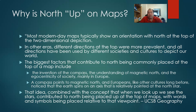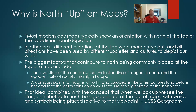The compass points to magnetic north, and Europeans, like other cultures, long before noticed that the earth spins on its axis and is relatively pointed to the north star. The idea is that we look up to see stars — not that we're on a round planet with stars all around us, but that we look up to see stars. So they named that one star the north star, the one that was helpful in finding direction. You look up, it's north, so they decided that north should be up on maps.